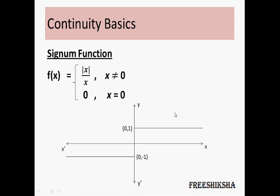On the other hand, if you have a look at this signum function — we have discussed this function before — it behaves as follows: till the time x approaches 0, the value is minus 1. At x equal to 0, the function takes value 0, and then onwards it goes to 1. So at x equal to 0, this graph is not continuous — it's getting broken here. This is a discontinuous function.